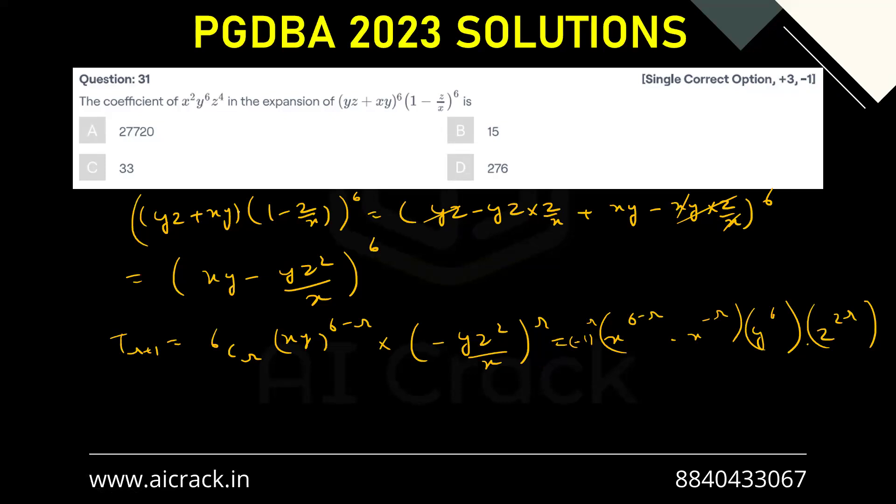Now I can see that we have x²y⁶z⁴ over here. So r basically is 2 only. That would satisfy over here. That would satisfy over here as well.